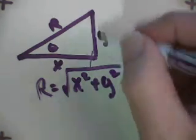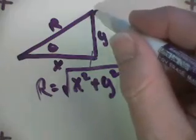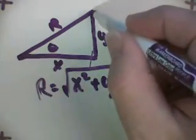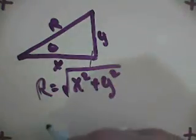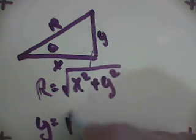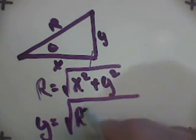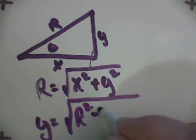If you wanted to know how high you would need to support a board a certain distance long, you would be able to say that Y is equal to the square root of R squared minus X squared.